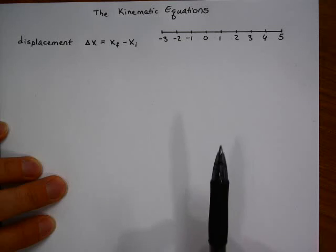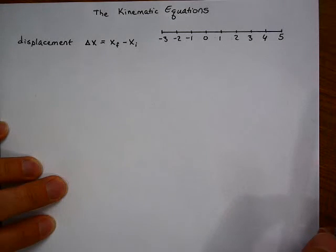Later we will discuss motion that is not along a line and we will need another way to describe direction, for example north, south, east, and west. At this point, we can just use positive and negative.